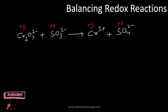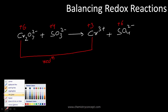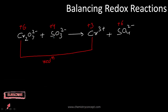On the product side, chromium is +3 and sulfur in sulfate is +6. Chromium is going from +6 to +3 — this is the reduction half-reaction. Sulfur is going from +4 to +6 — this is the oxidation half-reaction.